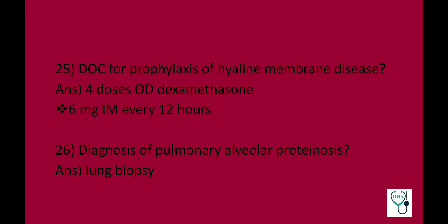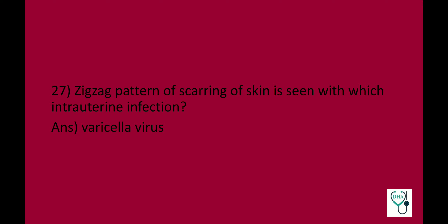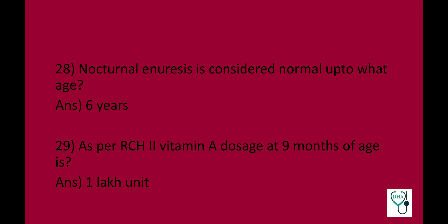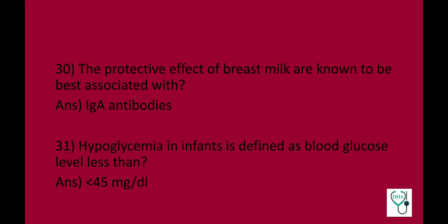Drug of choice for prophylaxis of hyaline membrane disease is dexamethasone — 4 doses, 6 mg intramuscular every 12 hours. This is a very important question. Diagnosis of pulmonary alveolar proteinosis is done by lung biopsy. Zigzag pattern of scarring of skin is seen with intrauterine varicella virus infection. Nocturnal enuresis is considered abnormal after 6 years. As per RCH Phase 2, vitamin A dosage at 9 months of age is 1 lakh units. The protective effect of breast milk is best associated with IgA antibodies.